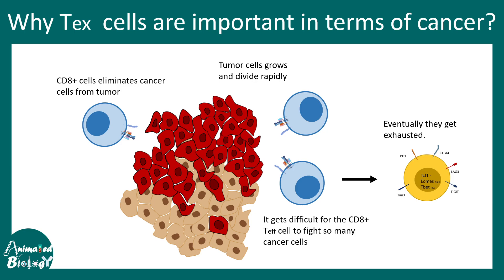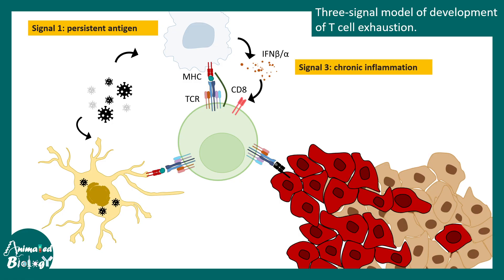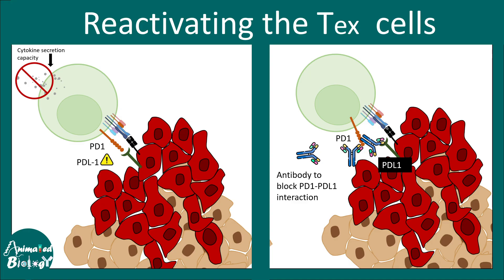Scientists are thinking about whether they can reverse this exhausted behavior. One known cause is persistent antigen exposure, but there are also other scenarios such as chronic inflammation and negative co-stimulatory signals — for example, PD-1 and PD-L1 interaction, which signals the T cell to stop. The idea is: what if we remove this brake? Scientists made monoclonal antibodies that block the PD-1 and PD-L1 interaction, so the T cells cannot be exhausted and can do their job without losing their killing ability — essentially regaining their superpower.